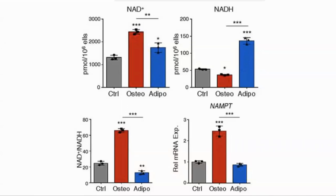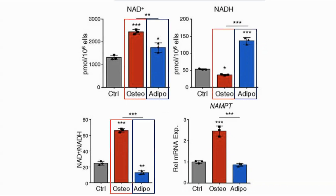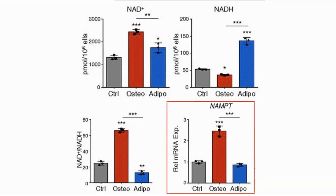Looking at the results, they looked at human stem cells in culture, where they were induced to differentiate into either a bone cell or a fat cell. In the bone cells, shown here in red, they saw higher NAD and lower NADH, and so a higher NAD/NADH ratio than the fat cells in blue. They also saw higher NAMPT activity, where NAMPT is the enzyme which converts nicotinamide into NMN in the NAD salvage pathway and is the main source of NAD in the cell.